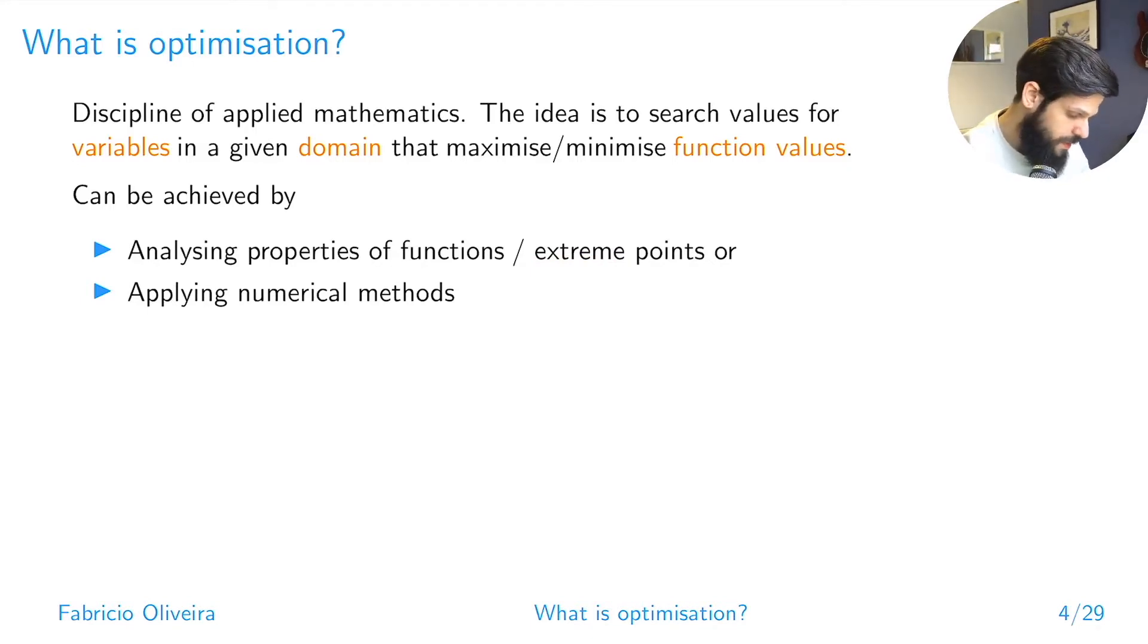Another idea is to apply a numerical method. Basically, you know what you're looking for, but finding a point that satisfies these properties is in itself a challenge. So you devise an iterative method that iterates until it finds a point that satisfies these properties, and once it does, it stops. These are competing ideas which are actually complementary, to be honest.